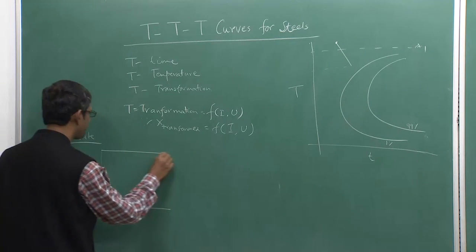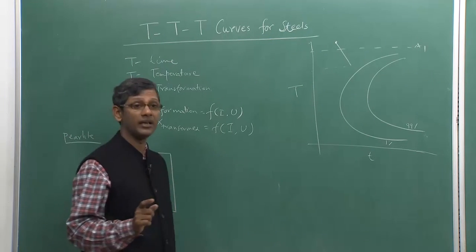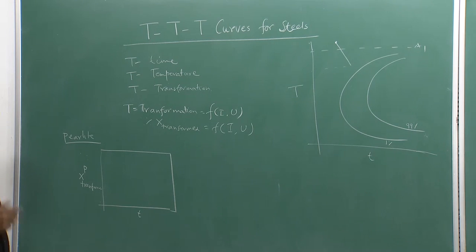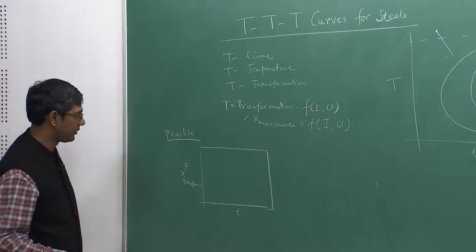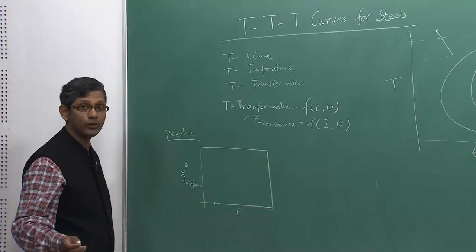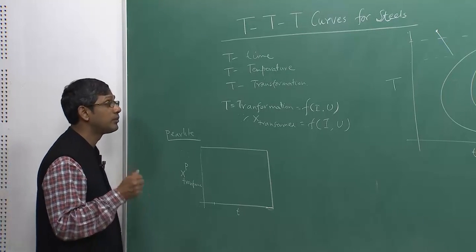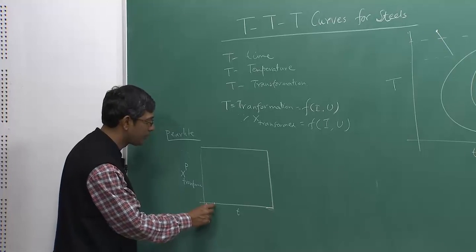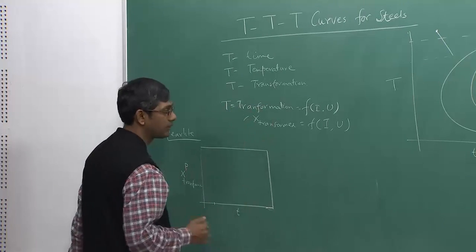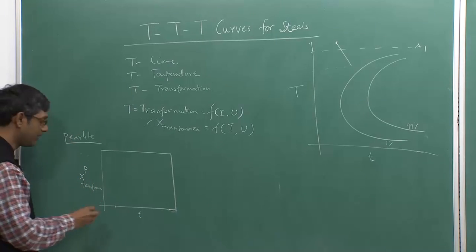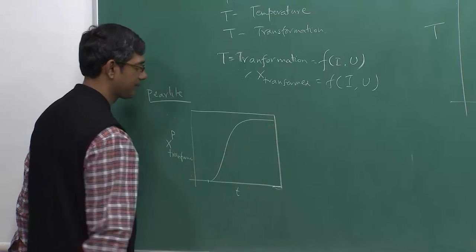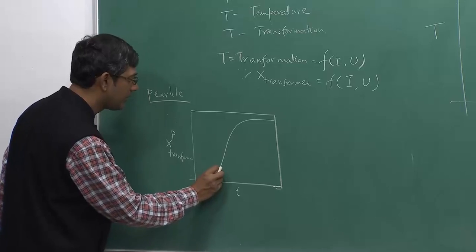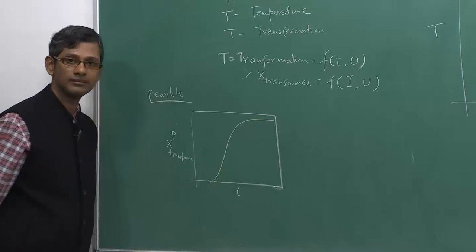As you know, pearlite transformation will not start immediately. It cannot start because it depends on nucleation — nucleation will happen at a particular time, so there is always an incubation period. Immediately transformation can happen only for martensite. Martensite transformation happens at the speed of sound, but both pearlite and bainite transformation will not start immediately at zero time. They will start at finite time — this is what is known as the incubation period. As you keep it longer and longer, the fraction transformation will increase and it will look like an S-shaped curve.